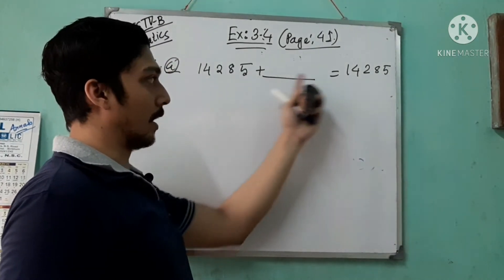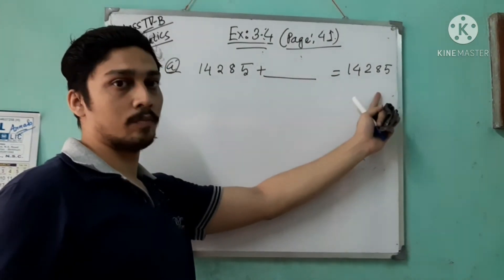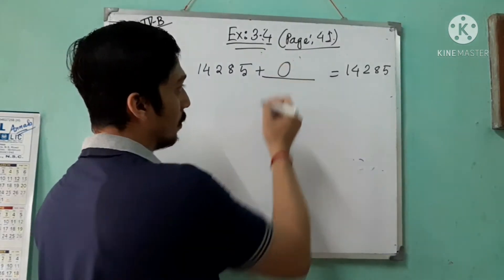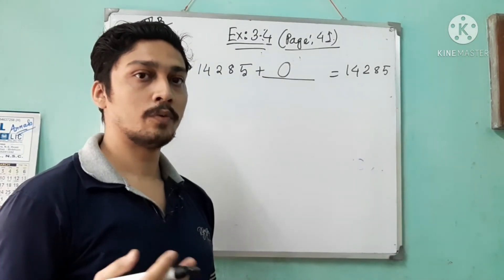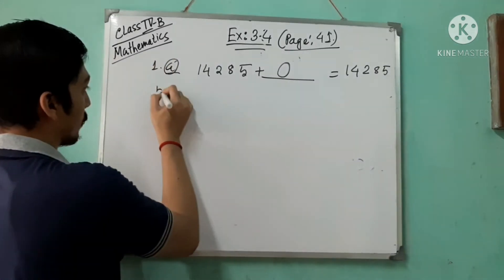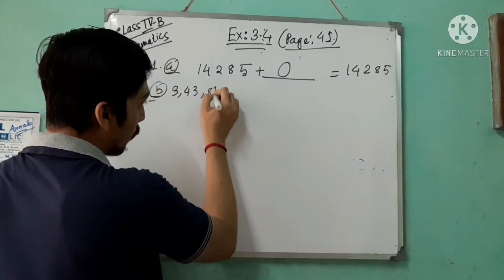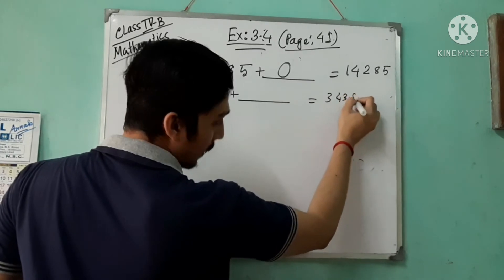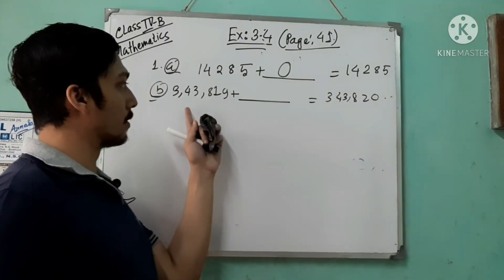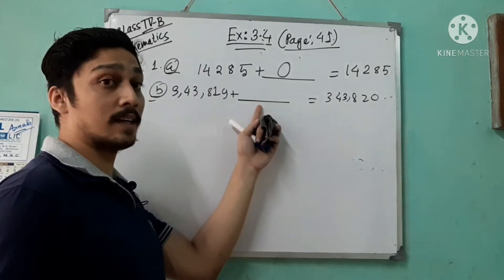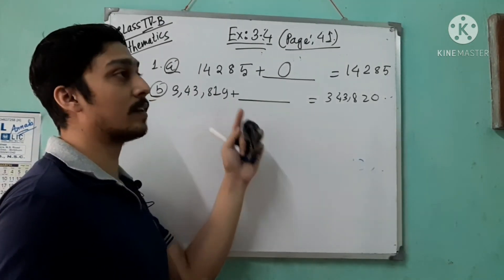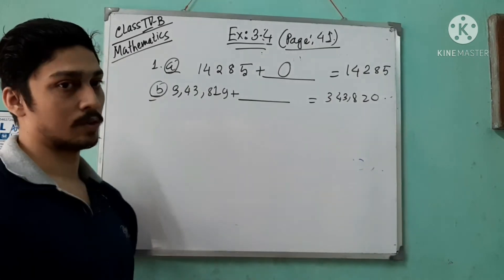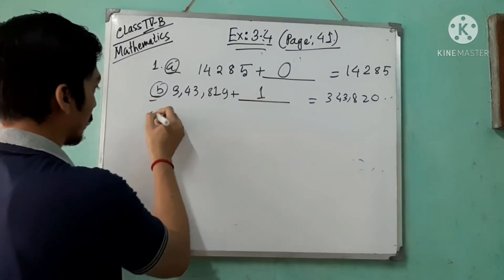The addend and sum are the same, so you have to add zero — because if you add zero, you get the number itself. Question 1b: 3,43,819 plus blank equals 3,43,820. After 19 you get 20, so the sum is 20 and the rest is the same — you have to add 1. This is the successor property.